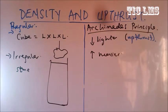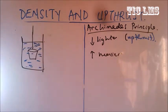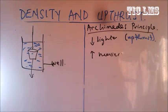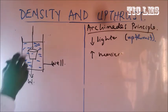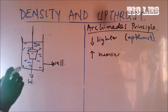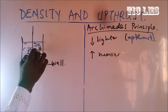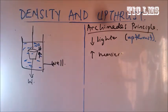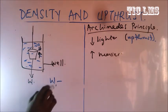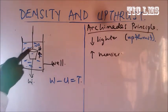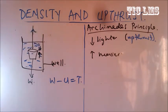If we have a diagram of a well, here is a bucket inside a well of water. This bucket has its own weight W. While it is inside the water, the water exerts an upward force on the bucket — that upward force is the upthrust. So we are going to say that the real weight minus the upthrust is equal to the tension while we are trying to pull it up.